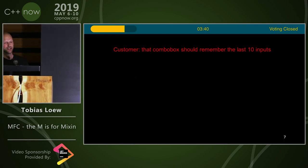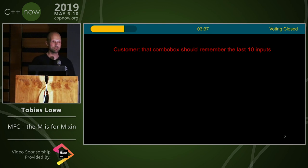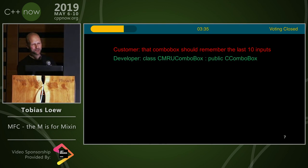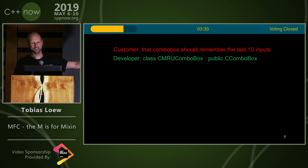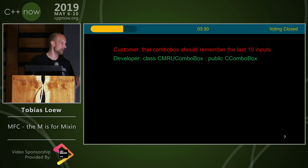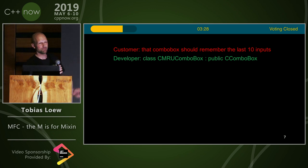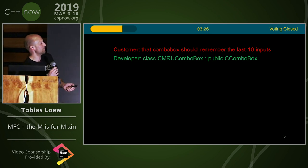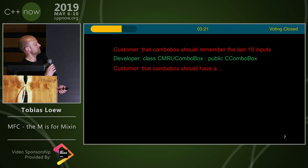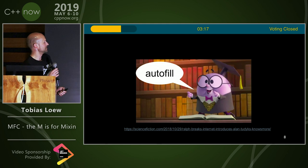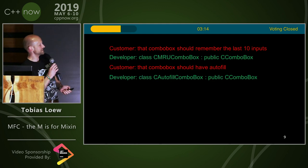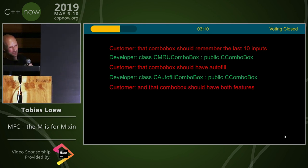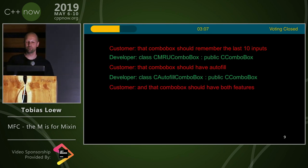The customer asks: 'That combo box should remember the last 10 inputs.' You look around and the developer comes up with a CMRUComboBox — a most recently used combo box — that's publicly derived from CComboBox. There's also an AutoFill combo box that's also derived from CComboBox. Now the customer says that combo box should have both features.